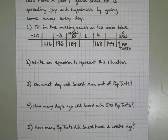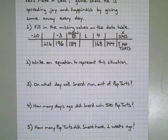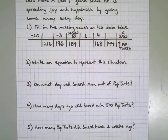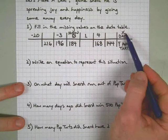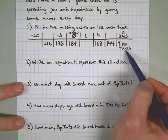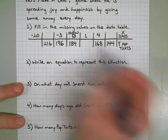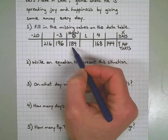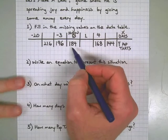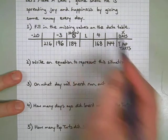Here we are. First we need to fill in this data table, then we can answer the questions. We need to see some kind of a pattern happening. Based on the table we see all the x values are the days, the y values equal how many pop-tarts he has left on any given day, and right now he has 184 pop-tarts.